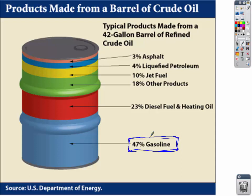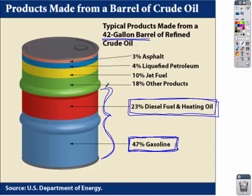Within every barrel of crude oil, about 47% is gasoline. Each barrel is about 42 gallons of crude oil — you'll hear how many millions of barrels are used per day. About 23% of each barrel becomes diesel fuel and heating oil, so that's roughly 75% of a barrel going to gasoline, diesel, and heating oil. The remainder goes to jet fuel, asphalt, and other products. Most of a barrel of oil goes to transportation and domestic heating use — we don't really use oil for electricity.